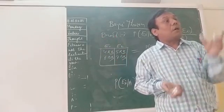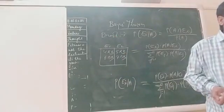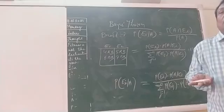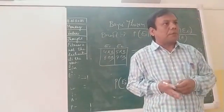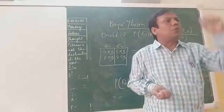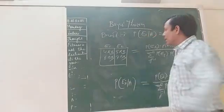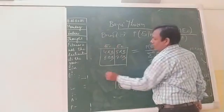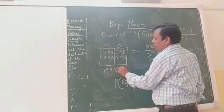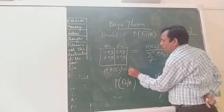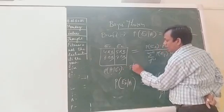Because Bayes' theorem gives you what? Just the opposite of the conditional probability. Reverse of the probability, you can say. Reverse. This means you are not going to find P(A|event). You have to find P(event|A).